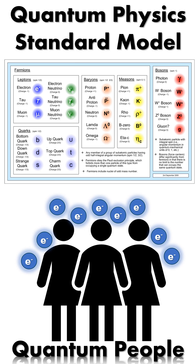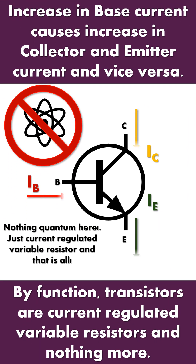In fact, elementary particles from the standard model individually do exhibit quantum properties. However, our transistor is a device from the macro world, with millions upon millions of atoms and electrons that make up the body of the transistor. Macro devices and objects from the real world do not inherit quantum properties from the building blocks of their elementary particles. That process is defined as decoherence — a loss of quantum properties for objects more complex than their individual elementary particles, such as highly complex molecules, and from there to materials and devices in the macro world. So no, transistors are not quantum devices, nor do they exhibit any quantum properties. For all purposes, by function, they are current-regulated resistors from the macro world — nothing more, nothing less.